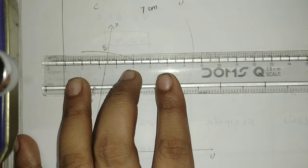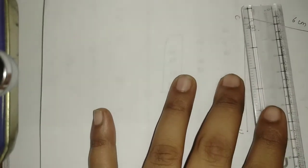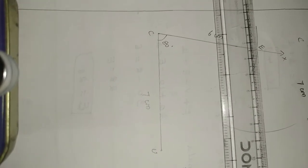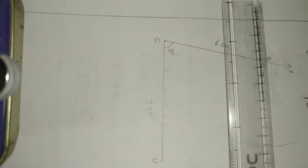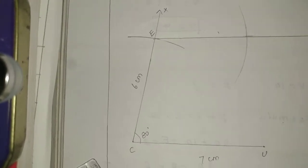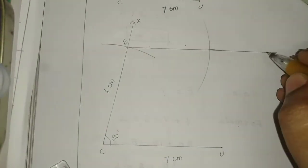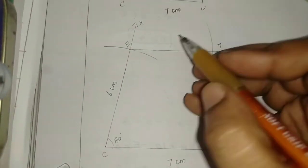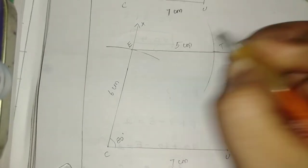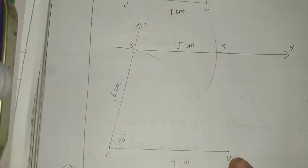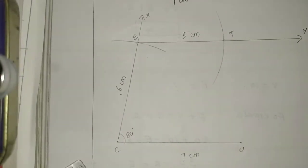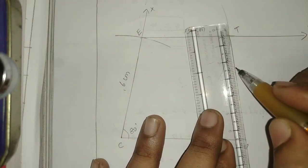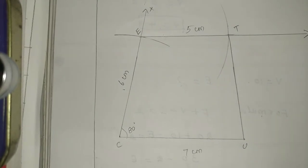Now draw the parallel line. Present the parallel line and drop the balance line. Join the points — so 5 cm, then draw the line and join. Join the line. Now measure the height.